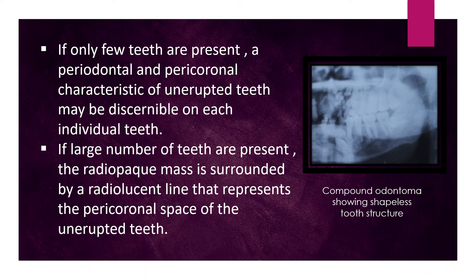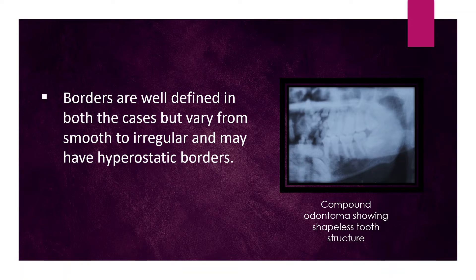If only a few teeth are present, a periodontal and pericoronal characteristic of unerupted teeth may be discernible on each individual tooth. If a large number of teeth are present, the radiopaque mass is surrounded by a radiolucent line representing the pericoronal space of the unerupted teeth. Borders are well defined but vary from smooth to irregular and may have hyperostotic borders.